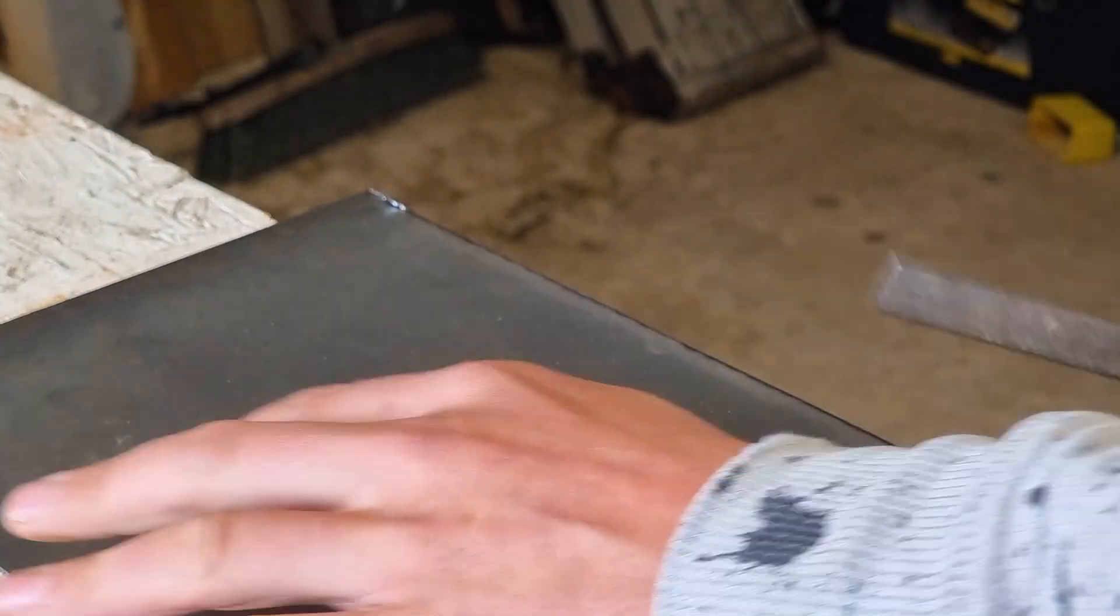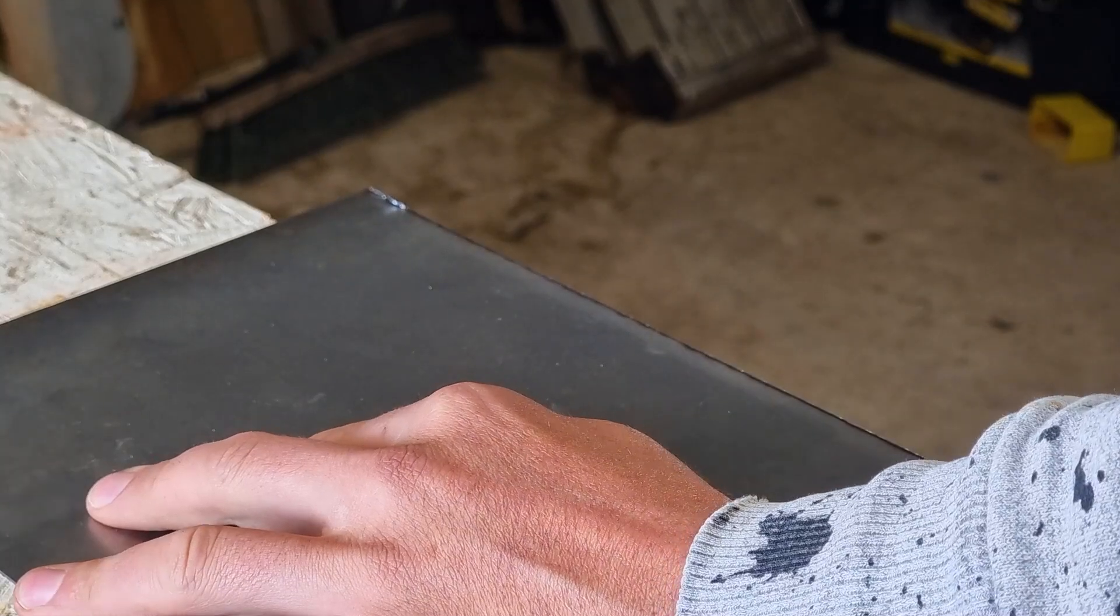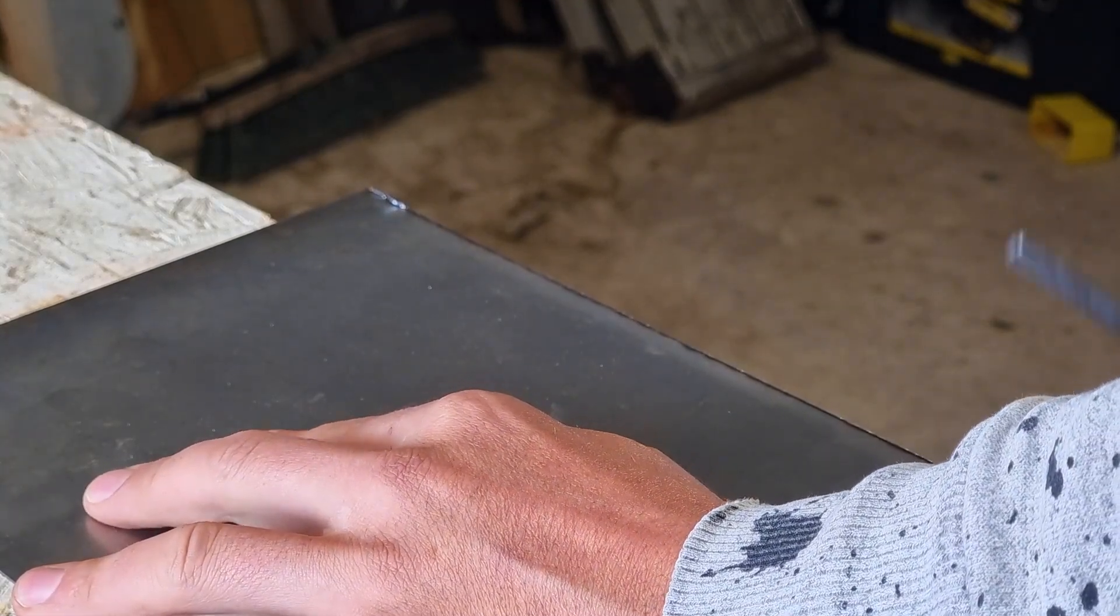Whenever you cut sheet metal, it's always important to have a file handy just to get rid of all those sharp edges. Because once you've cut through metal, it's always razor sharp.